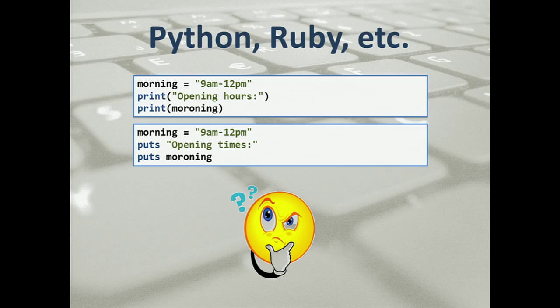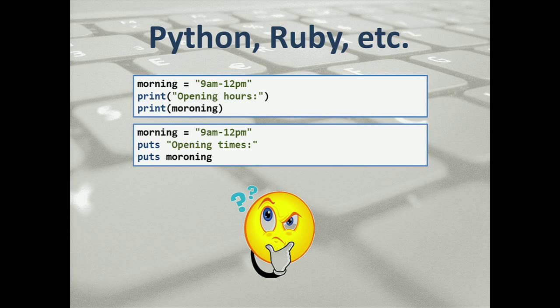Now this is Python and Ruby. If you squint, they basically look about the same. What happens here? It says 'opening time' and then you get an error — a traceback in one case, and a wonderfully big hex number in the other, which is extremely helpful for something, I'm sure. This is on the other end of the scale: we try and run until we really, really can't run, and then we panic.